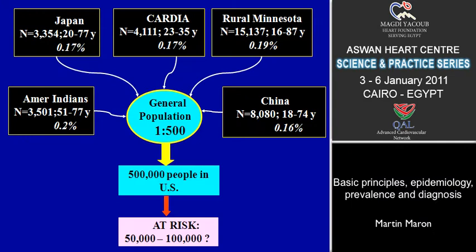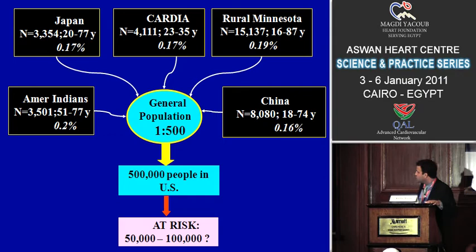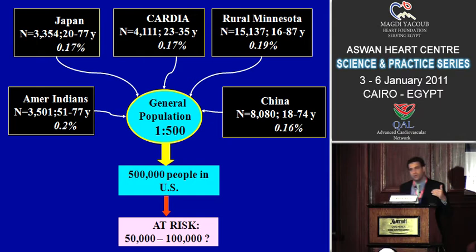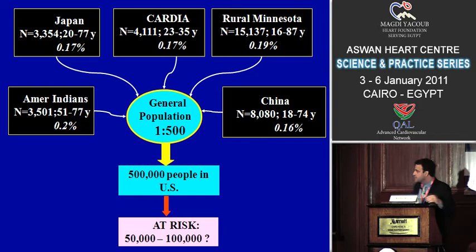We're going to spend a little bit of time talking about an overview of the disease, both the phenotypic expression and some highlights of basic principles with regard to the clinical aspects. Hypertrophic cardiomyopathy is the most common genetic heart disease with a prevalence of 1 in 500 in the population. This prevalence has been reproduced in different continents and ethnic populations around the world. Applying that to the U.S. population, you're talking about half a million people with HCM.